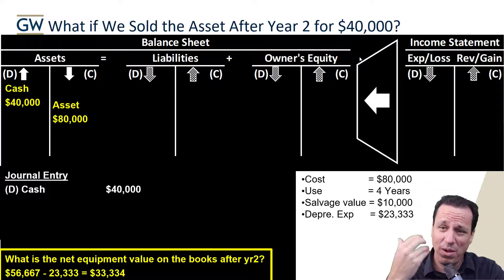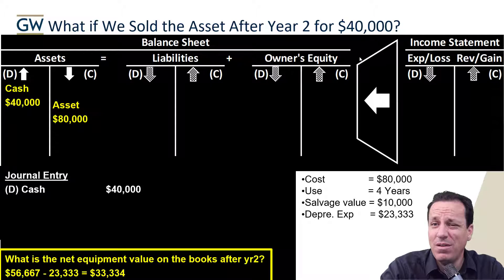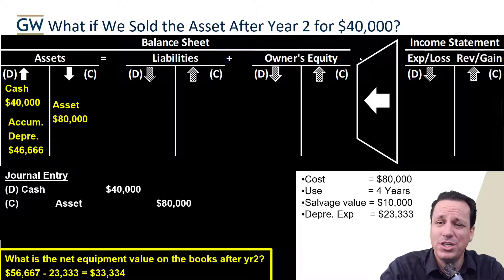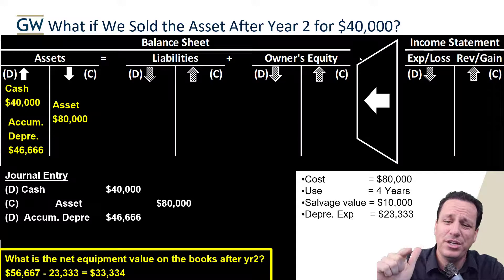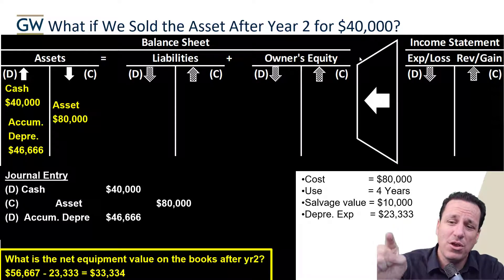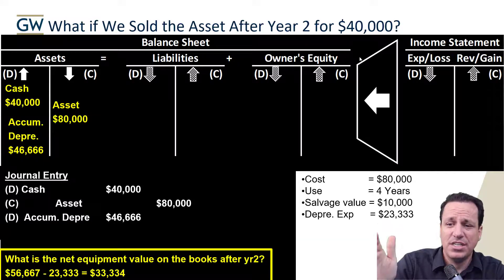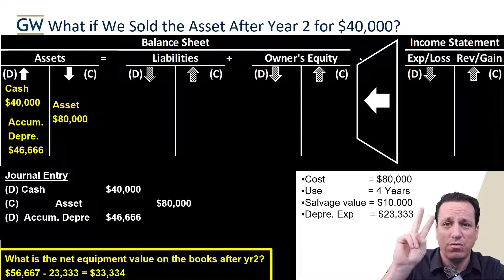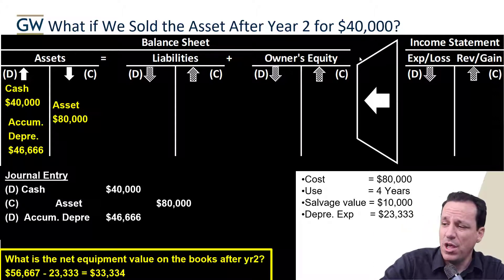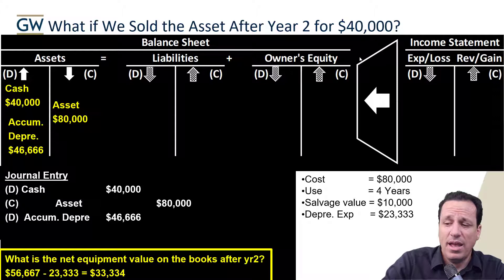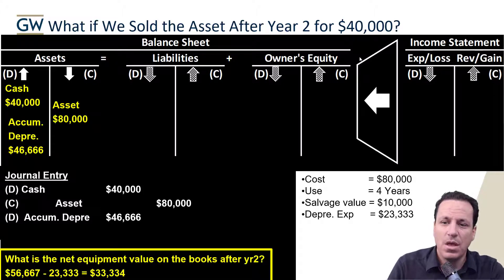The asset does have a net value less than $80,000, but it's still recorded at its historical cost. To account for that net value, we debit accumulated depreciation for the total amount depreciated. In this case, $46,666 has been depreciated over two years — two entries of $23,333 each. So the asset's net book value at the end of year two was $33,334.